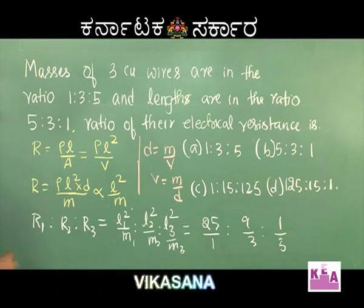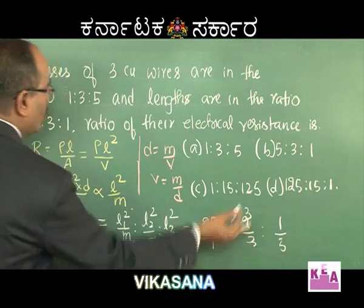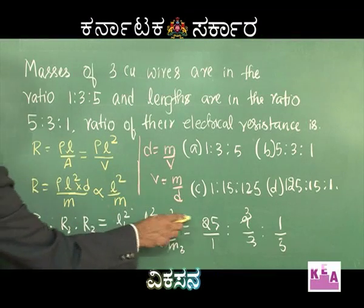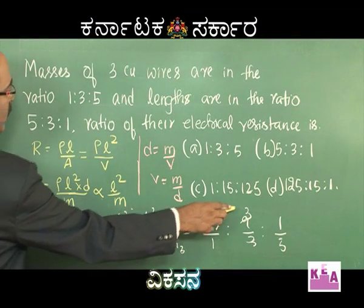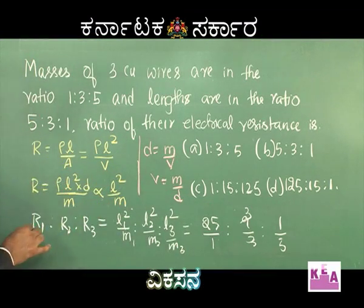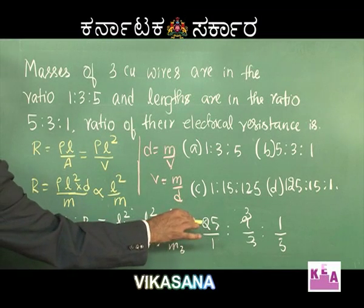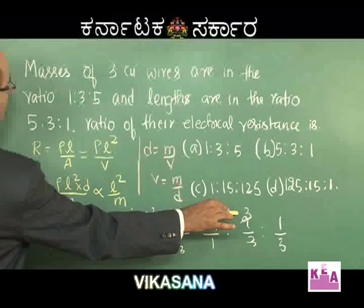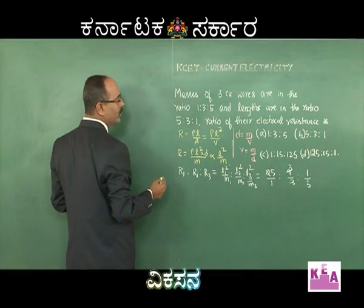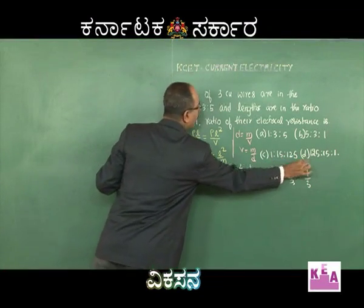Now completing the ratio: 25/1 : 9/3 : 1/5, which gives 25 : 3 : 0.2. Multiplying throughout by 5, we get 125:15:1. Therefore R1:R2:R3 = 125:15:1, and option D is correct.